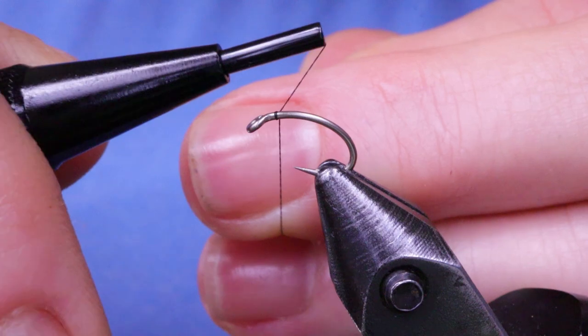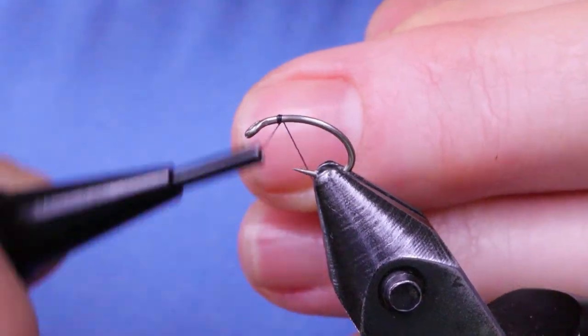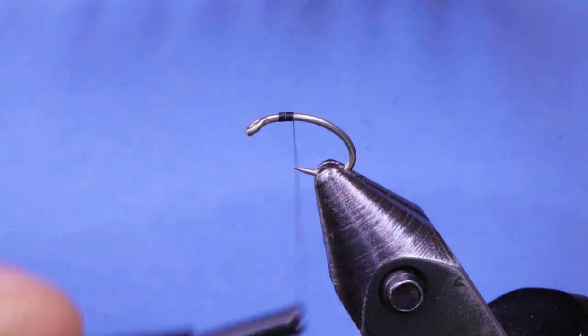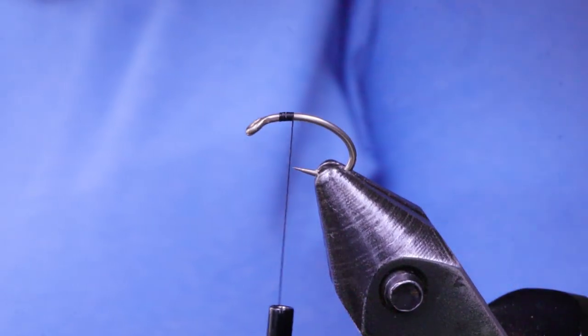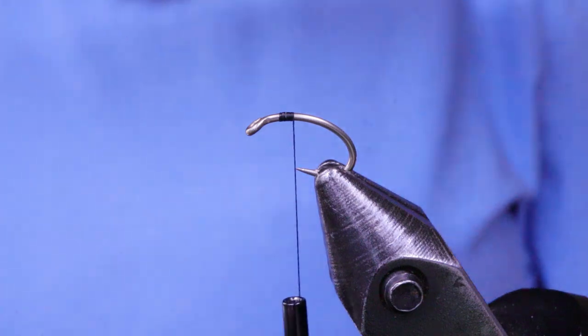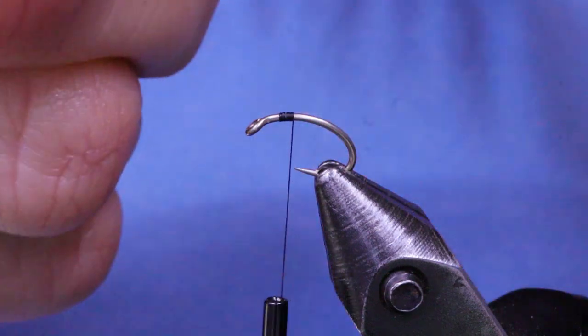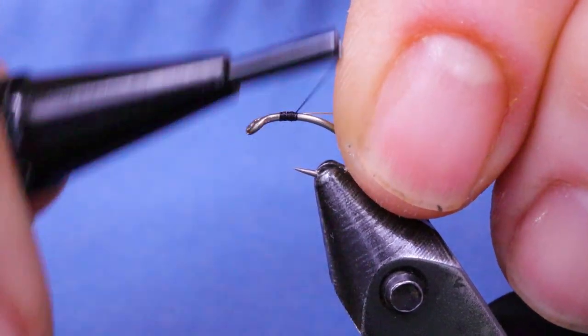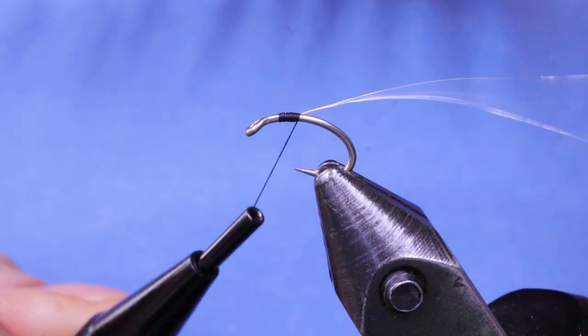So you can go ahead and start your thread and I'm just going to leave it a little bit back from the hook eye at first. Next take your piece of wire and tie that in. You could use any color wire. Copper would be good. Red would be good as well.